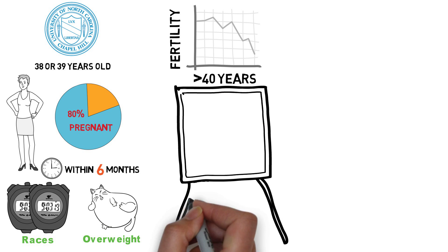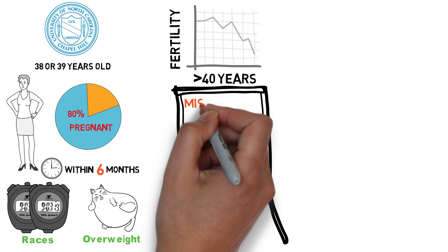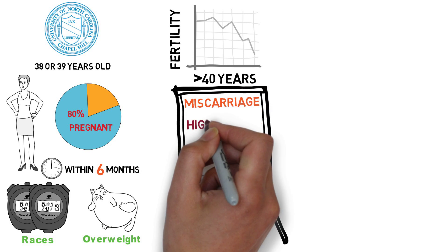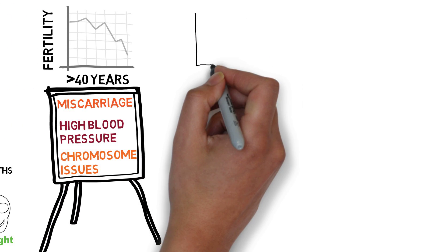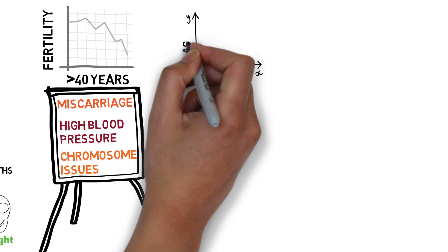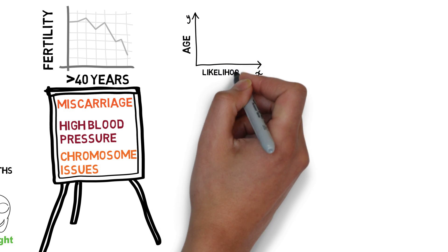However, we need to think not just about likelihood of getting pregnant, but complications with pregnancies like miscarriage, high blood pressure and chromosome issues like Down syndrome. In general, all of these things get more likely with age, but probably not as much as you think.